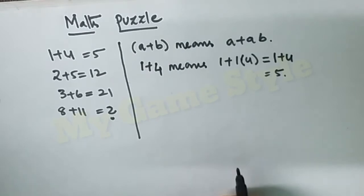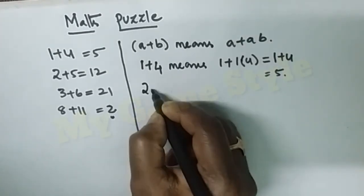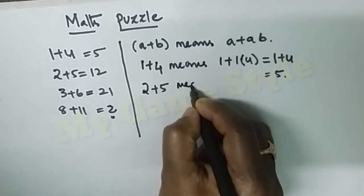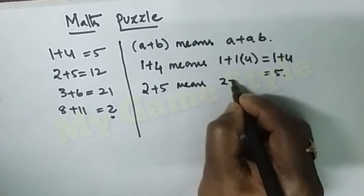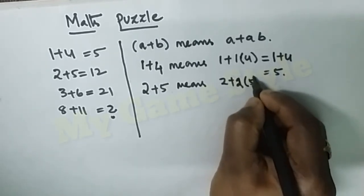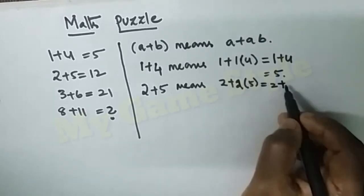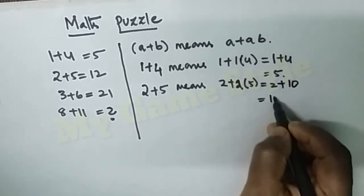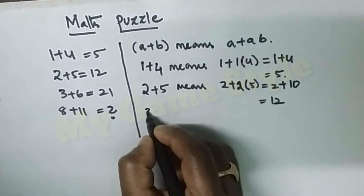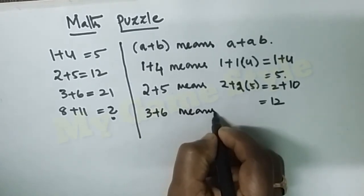Next, 2+5. This means 2 plus 2×5, which equals 2+10=12. So this is how you got 12.